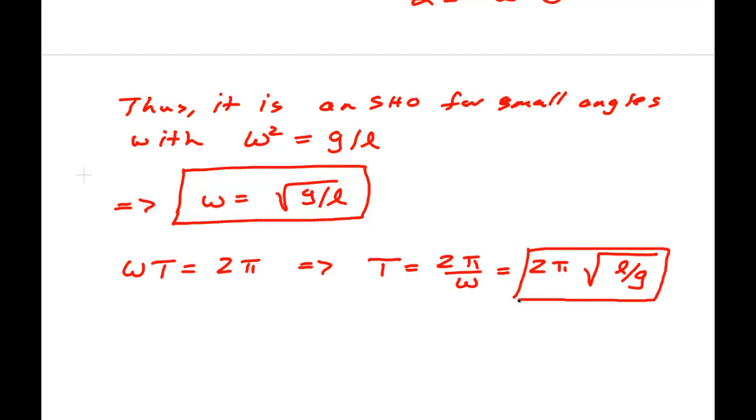So the only thing on planet Earth that you need to determine the period is the length of the string. Because the acceleration of gravity is 9.8 meters per second squared. F is 1 over T. So that's 1 over 2π the square root of g over L.